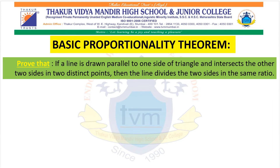The statement of this theorem states: if a line is drawn parallel to one side of a triangle and intersects the other two sides in two distinct points, then the line divides those two sides in the same ratio.